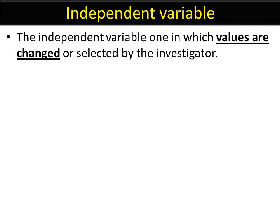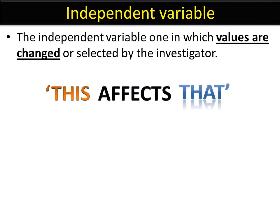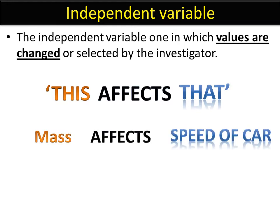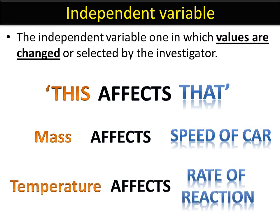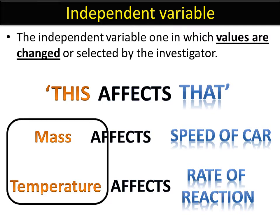The independent variable is the variable that is changed by the person doing the experiment to see what effect it has. In science, what we're often trying to find out is how one thing affects another. Here's a couple of examples: how does the mass of a car affect the speed of a car, or how does the temperature affect the rate of reaction? In these cases, the mass and the temperature — the thing we've changed to see what effect it has — that is the independent variable.